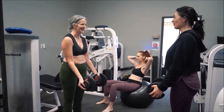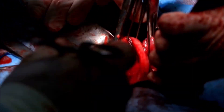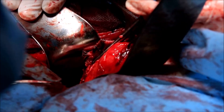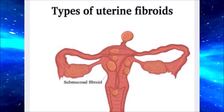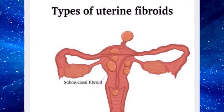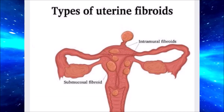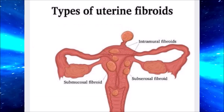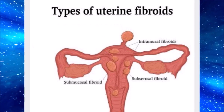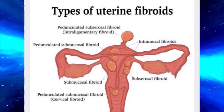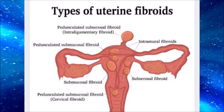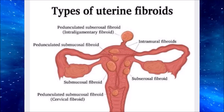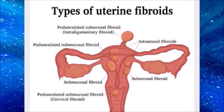Hysterectomies due to fibroids are the most common major surgery for women, and uterine fibroids are classified according to their location. That would be submucosal fibroids, which are just under the lining of the uterus; intramural fibroids, which are within the uterine muscle wall; and subserosal, which is just inside the outer wall of the uterus. There's also interligamentous, which is in the cervix between the two layers of the broad ligament, and also pedunculated fibroids, which are on a stalk and can either be submucosal or subserosal.